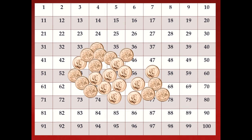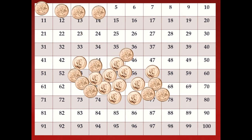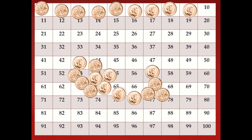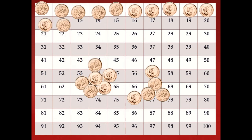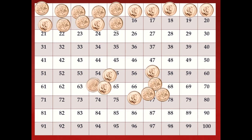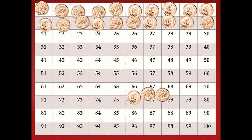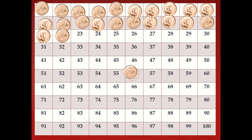Here I have a hundreds chart and a bunch of pennies. Sometimes it's helpful when we're counting money to use a hundreds chart. I am going to move the pennies as we count them. Would you count with me? One, two, three, four, five, six, seven, eight, nine, ten, eleven, twelve, thirteen, fourteen, fifteen, sixteen, seventeen, eighteen, nineteen, twenty, twenty-one, twenty-two, and twenty-three. That is twenty-three cents.